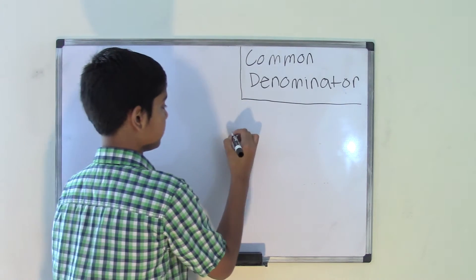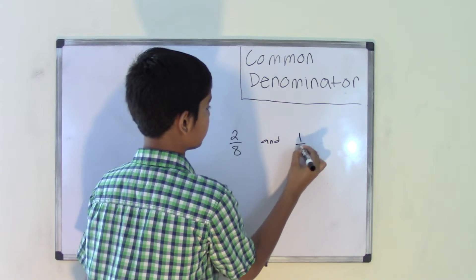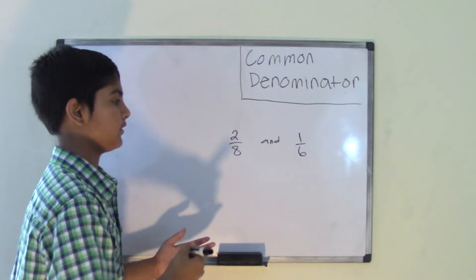Let's take the two fractions, 2/8 and 1 over 6. We need to find the common denominator for these fractions.